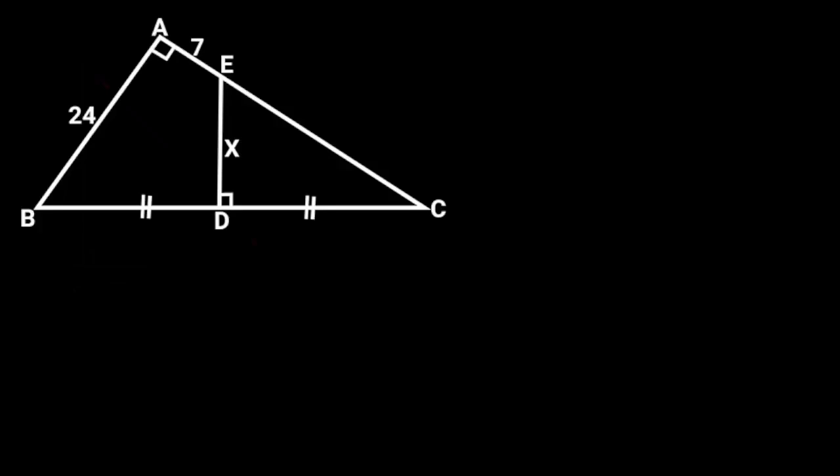This figure is a right triangle ABC. DE is perpendicular to BC, and BD is equal to DC. If AB is 24 units and AE is 7 units, find the value of X.